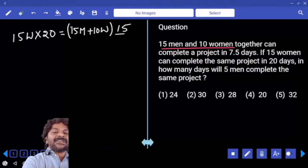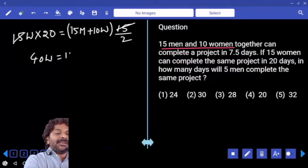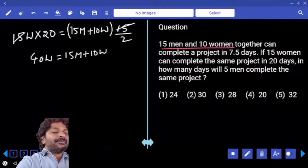7 and a half, which I'll write as 15 by 2. 15 gets cancelled, 2 goes to left hand side, that is equal to 40 women, which is 15 men plus 10 women. From this, 30 women is equal to 15 men, then M by W is equal to 2 by 1.